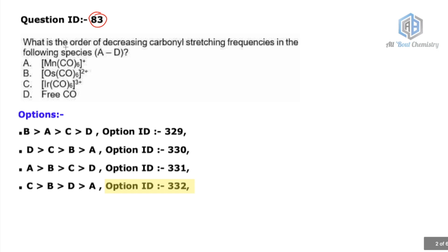Let's start this video. First question is Question ID 83. This question says what is the order of decreasing carbonyl stretching frequencies in the following species from A to D. We have manganese complex, osmium complex, iridium complex, and free CO.